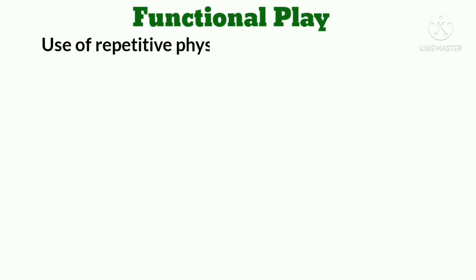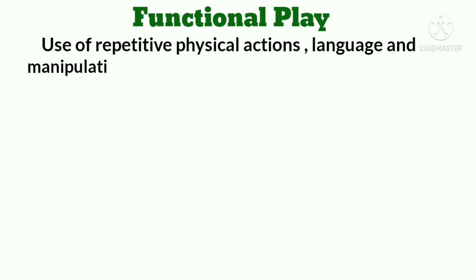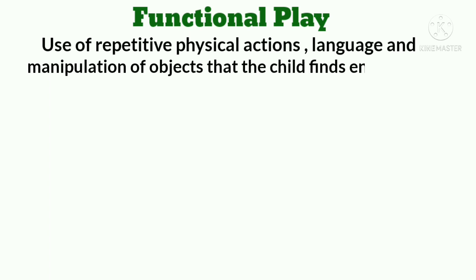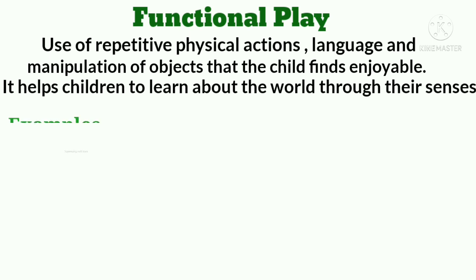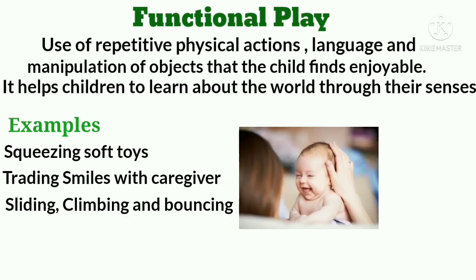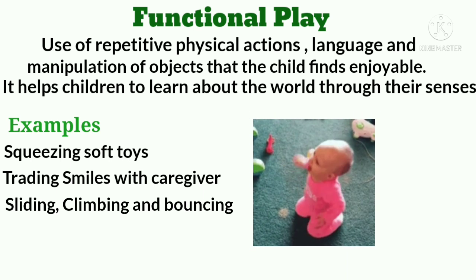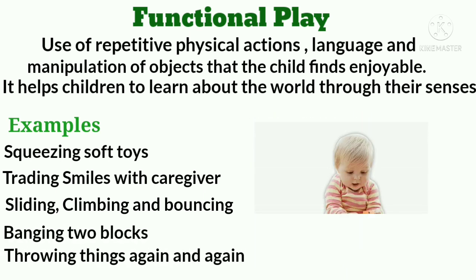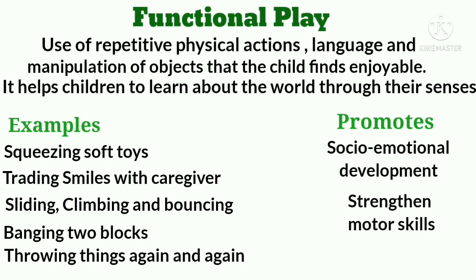The first type of play is functional play. It involves the use of repetitive physical action, language, and manipulation of objects that the child finds enjoyable. It helps children learn about the world through their senses. Examples include squeezing soft toys, trading smiles with caregivers, sliding, climbing, bouncing, and banging or throwing blocks again and again. It promotes socio-emotional development and motor skills. Key words to mark: repetitive action and use of senses.